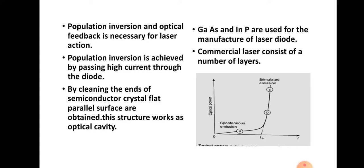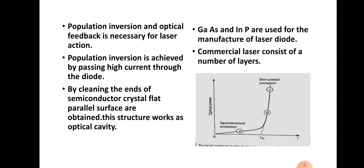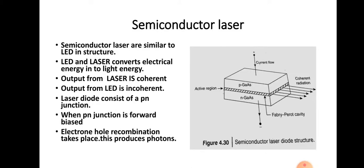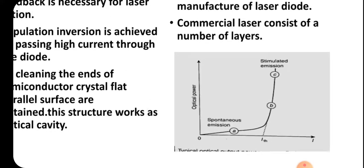By cleaving the ends of the semiconductor crystal, flat parallel surfaces are obtained, and this structure works as the optical cavity. Light has to be emitted from the active region, and that active region is made by cleaving the ends of the semiconductor crystal to flat parallel surfaces, so this will work as the optical cavity. Usually gallium arsenide and indium phosphate materials are used for manufacturing the laser diode. In commercial lasers, a large number of layers are used for the confinement of the laser light into the active region.